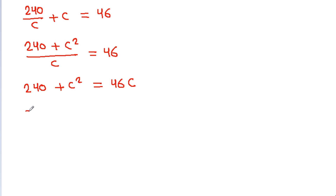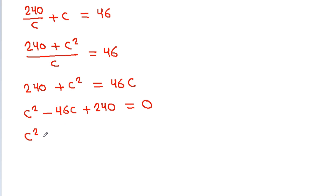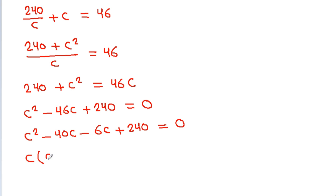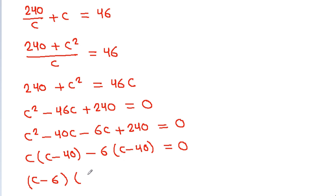That gives us C squared minus 46C plus 240 is equal to 0. We split minus 46C as minus 40C minus 6C plus 240 equals 0, giving C times C minus 40, and C minus 6 times C minus 40 is equal to 0.